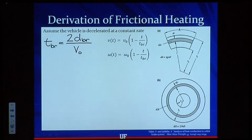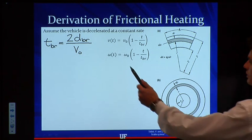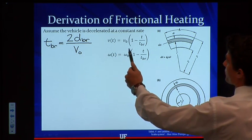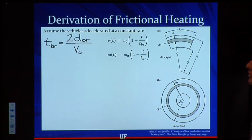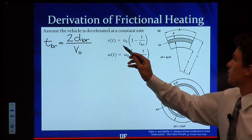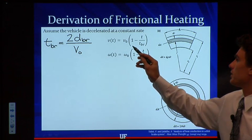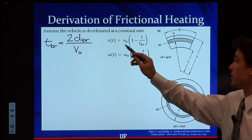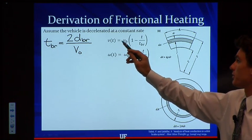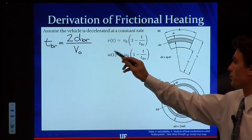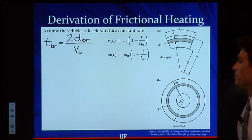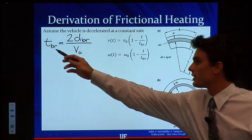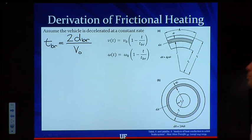Also, the velocity as a function of time is now just equal to — because it's decelerated at a constant rate — we have a very easy expression for v_t and the rotational rate as a function of t and, of course, as a function of the brake time.